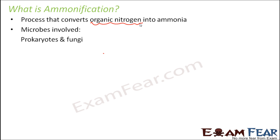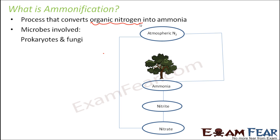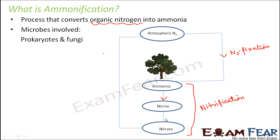This ammonia is available for uptake by plants and other microbes for growth. To summarize: atmospheric nitrogen to ammonia is nitrogen fixation. Ammonia to nitrate is nitrification. Nitrate back to atmospheric nitrogen is denitrification. And when a plant dies or excretes something containing organic nitrogen, converting that organic nitrogen into ammonia is called ammonification.